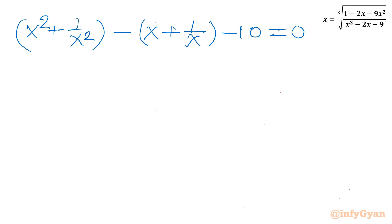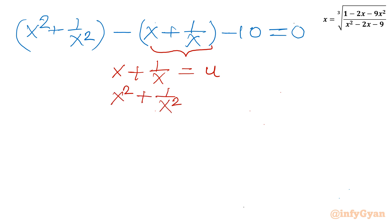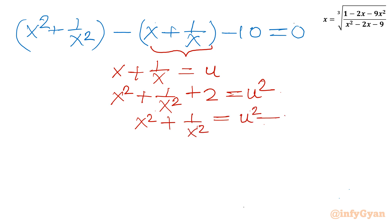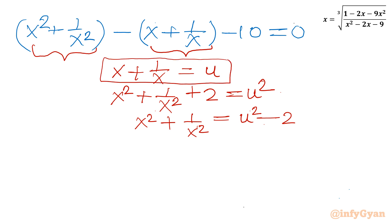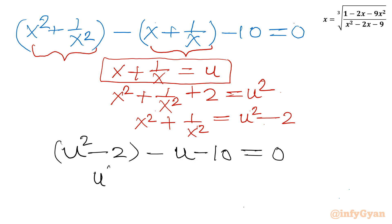Now it's substitution time. Let u = x + 1/x. Squaring both sides: x² + 1/x² + 2 = u², so x² + 1/x² = u² minus 2. Substituting back: (u² minus 2) minus u minus 10 = 0, which gives u² minus u minus 12 = 0.